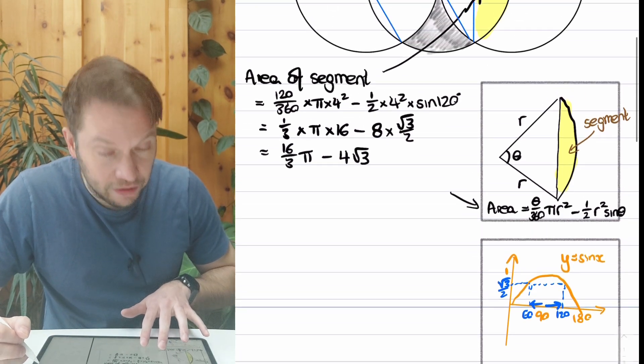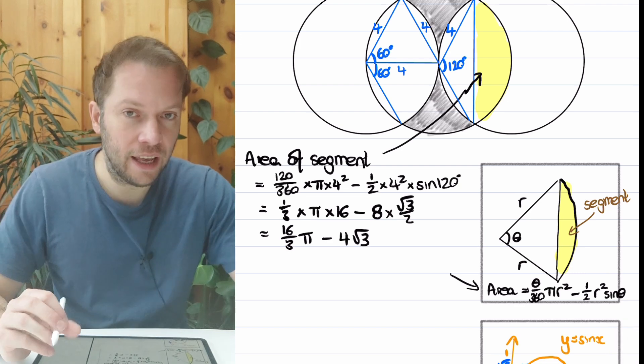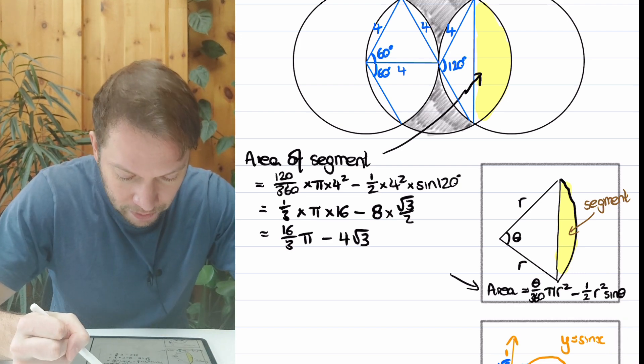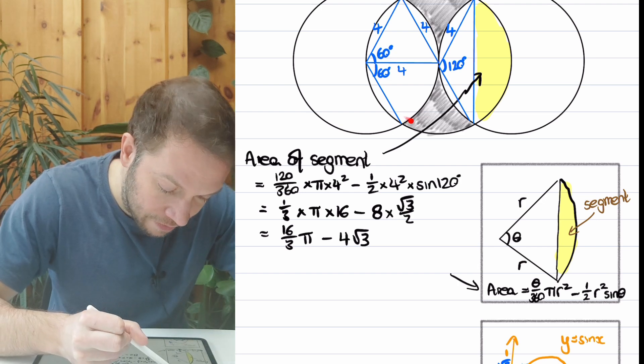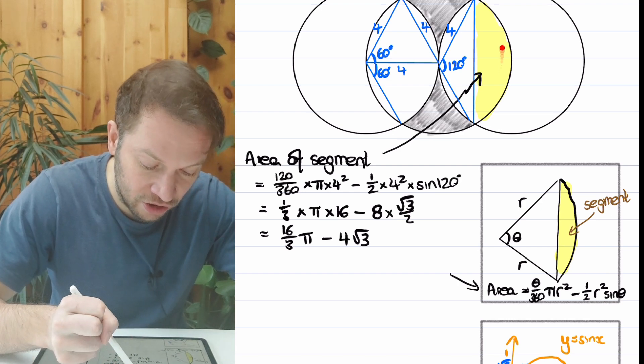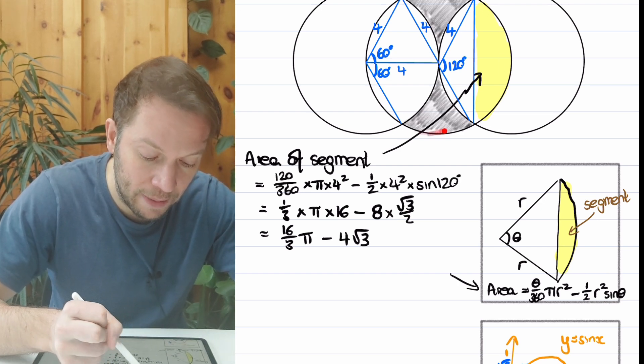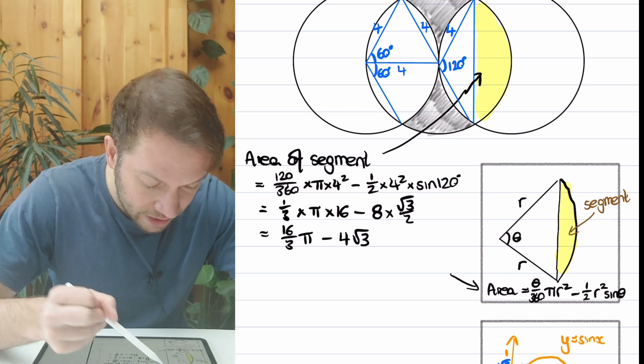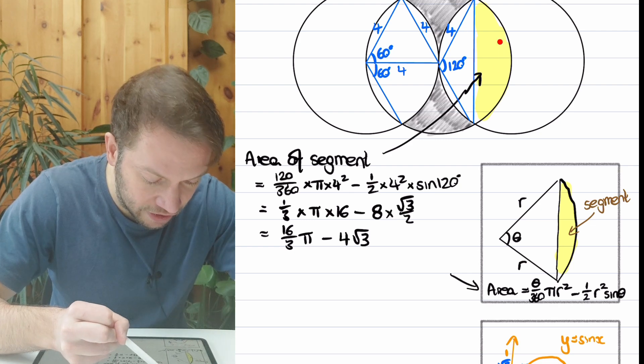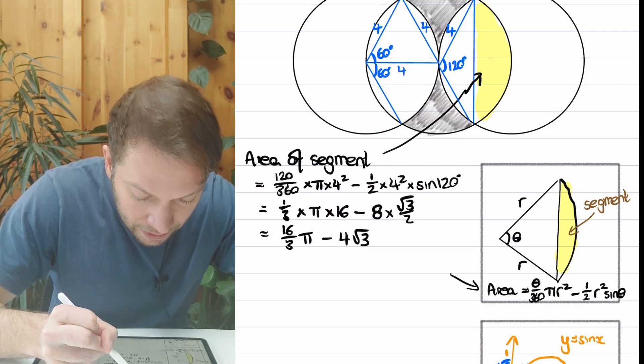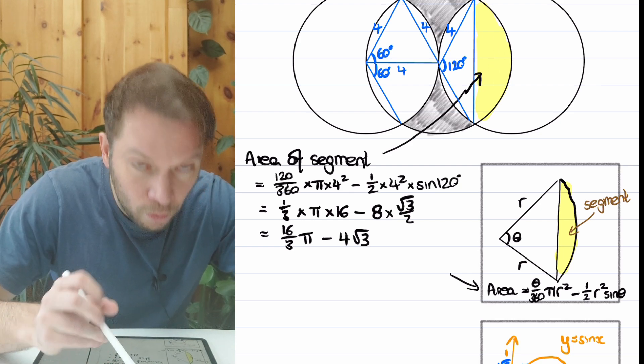We've nearly found the area of the shaded region, the top and the bottom. As we said earlier, we want to start with the area of the circle, which is just going to be π times the radius squared, π times 4². And then we're going to subtract both these leaves on the right and the left. We've worked out the area of just this yellow segment.